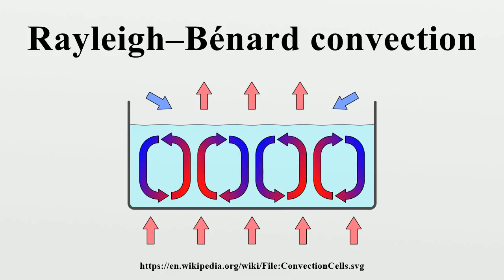The rotation of the cells is stable and will alternate from clockwise to counterclockwise horizontally. This is an example of spontaneous symmetry breaking. Bénard cells are metastable, meaning that a small perturbation will not be able to change the rotation of the cells, but a larger one could affect the rotation. They exhibit a form of hysteresis.